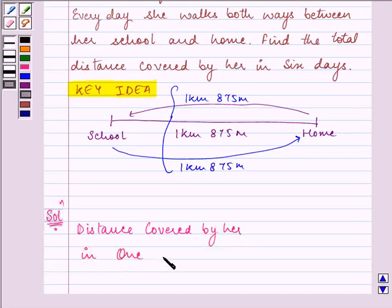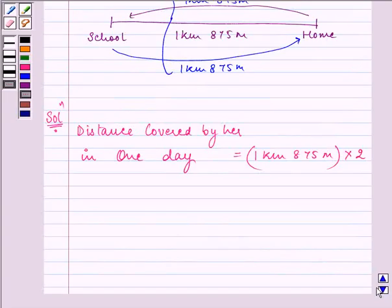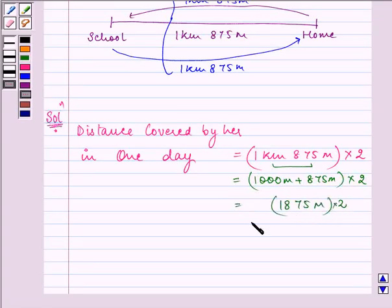in one day, since we need to find the answer in days, is 1 kilometer 875 meters twice. So first we will convert this: it will be 1000 meters plus 875 meters, then getting multiplied by 2. Because 1 kilometer has 1000 meters, the answer is 1875 meters multiplied by 2, which gives us 3750 meters. So in a day she is walking 3750 meters.